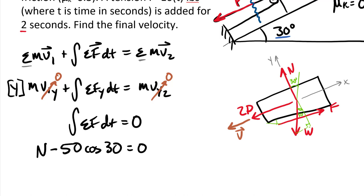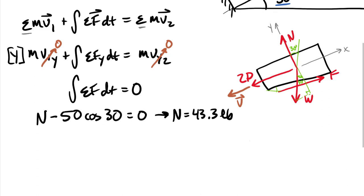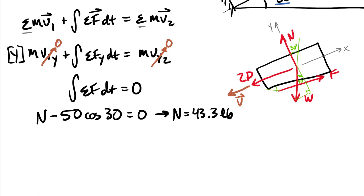This is equal to zero. Therefore we can find that our normal force is equal to a constant value of 43.3 pounds. So we'll need that normal force so we can factor in our friction, our kinetic friction, in the X direction.